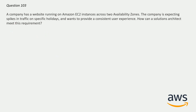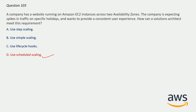Question number 103: A company has a website running on Amazon EC2 instances across two availability zones. The company is expecting a spike in traffic on specific holidays and wants to provide a consistent user experience. How can a solution architect meet this requirement? The correct answer is option D: Use scheduled scaling, because we are expecting traffic at predictable times. When load is predictable, we always use scheduled scaling.